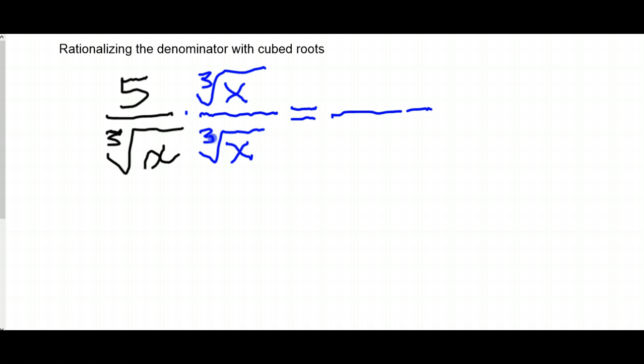So to see what the right thing to multiply by is, what do we put down here in this denominator? Well, let's think about this. We're trying to get rid of all radical signs. What is it that I really want on this right side? I want an x,